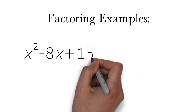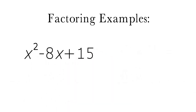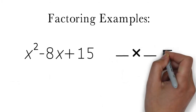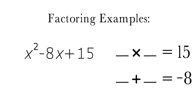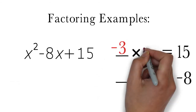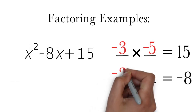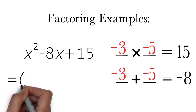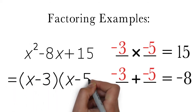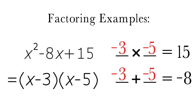For the next example, consider the trinomial x squared minus 8x plus 15. In order to factor this trinomial, we need to find two numbers that multiply to 15 and add up to negative 8. The numbers that do this are negative 3 and negative 5. Therefore, we can factor x squared minus 8x plus 15 as a product of the binomials x minus 3 and x minus 5.